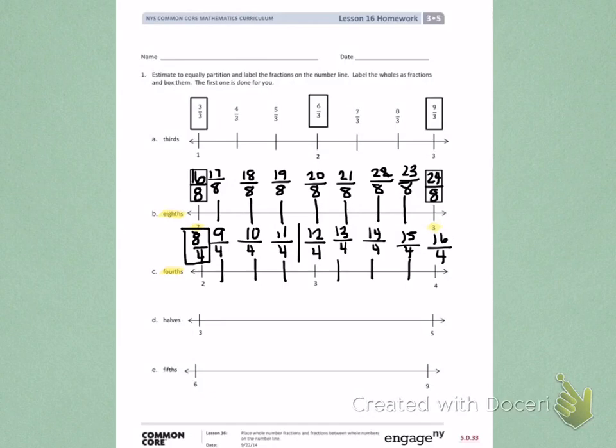Going back, I need to put the box around 12 fourths, because it represents a whole number. I also need to put a box around 16 fourths, because it represents a whole number.